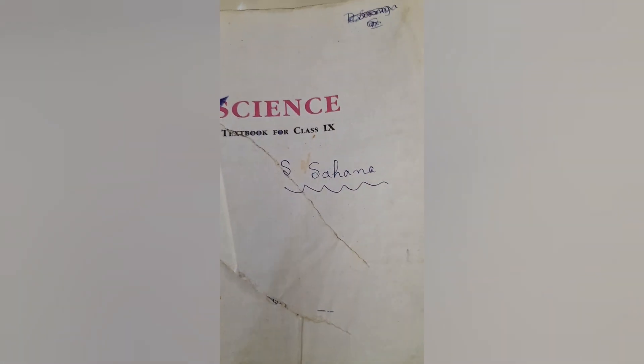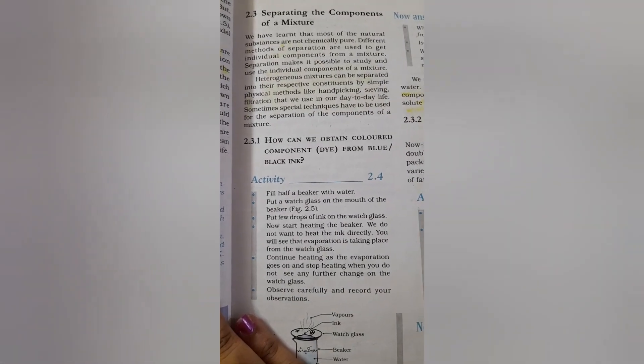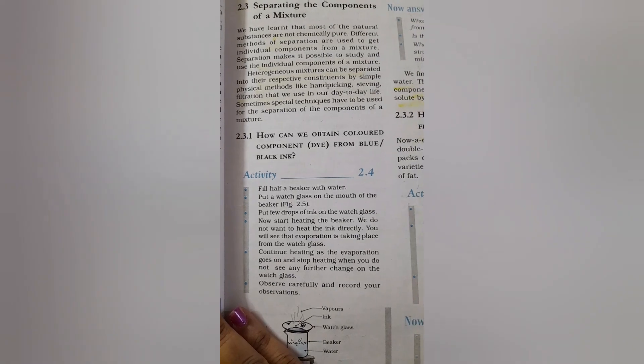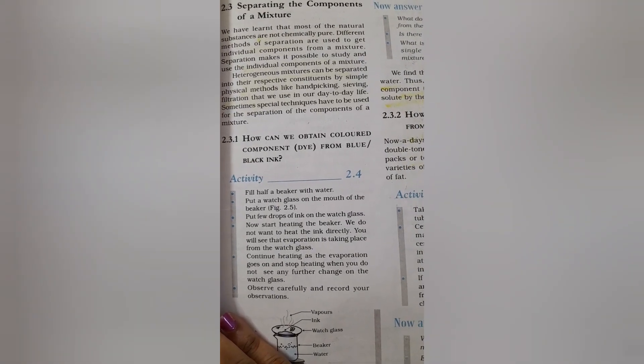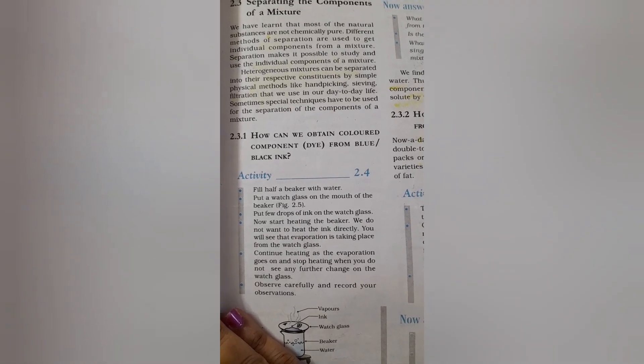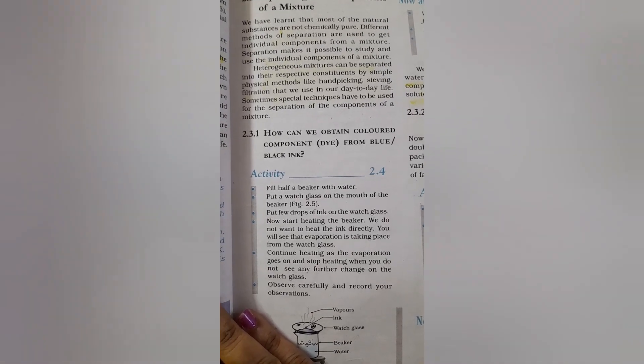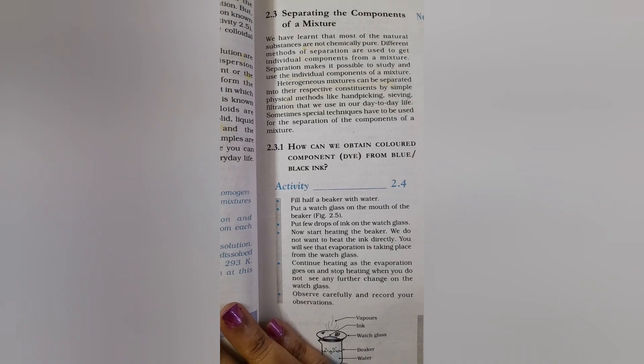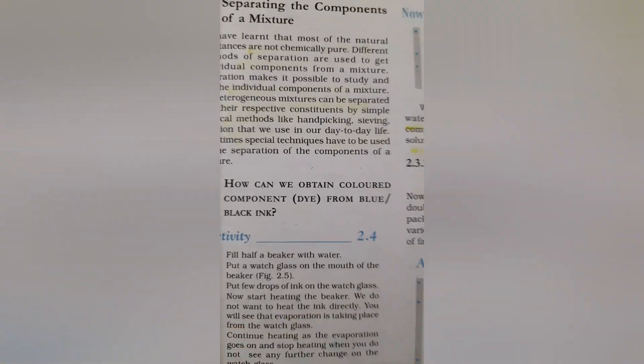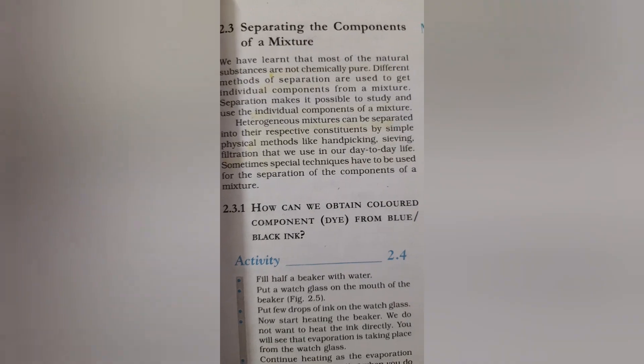Hello dear children, today we are going to continue with class 9 science. This is our channel Amazing World of Science where we do line-to-line NCERT from classes 8 to 12, focusing more on class 10 and class 12, along with classes 9, 11, and 8. In our last session for class 9 NCERT chemistry we finished colloids, suspensions and all that, so today we will be doing separating the components of a mixture.